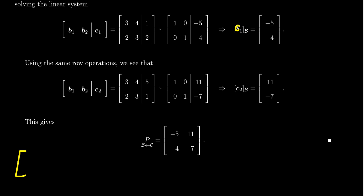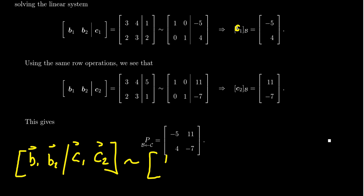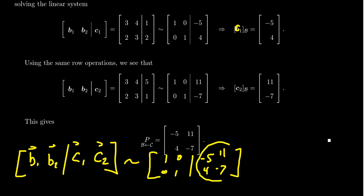We essentially solved two linear systems that were the same. What we could have done instead is augment the basis B with both C1 and C2 simultaneously, since during row reduction we only care about the left-hand side — the right-hand side just goes along for the ride. So we can row reduce with more than one augmented column. Doing so, the left side reduces to the identity (standard basis for R²) and the right side gives (-5, 11) and (4, -7), yielding the change of basis matrix directly. This is how we will generally solve for the change of basis matrix.